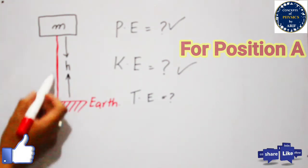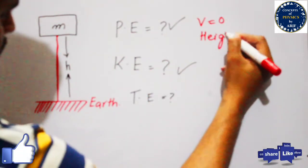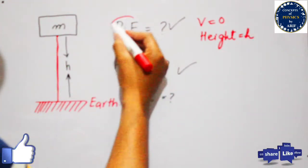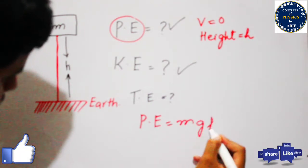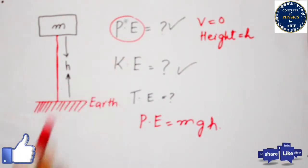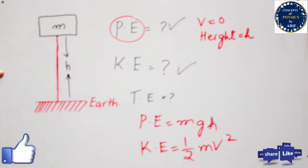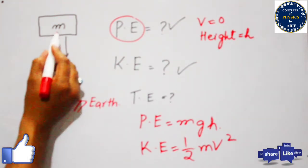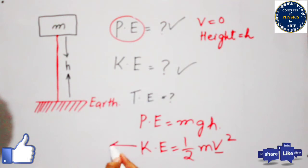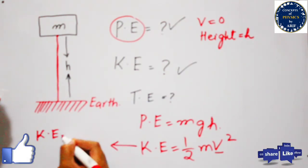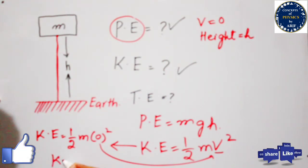In Case 1, when the body is at rest at some height, its velocity is equal to zero and its height is equal to h. The potential energy is equal to mgh. For kinetic energy, the formula is half mv squared. Since the body is at rest, velocity is zero, so kinetic energy is equal to half m into zero squared, which gives kinetic energy equal to zero.